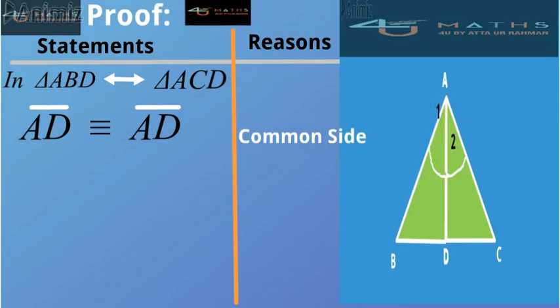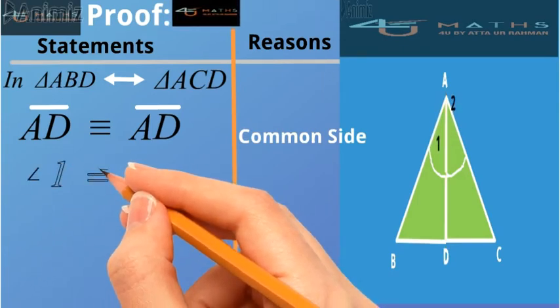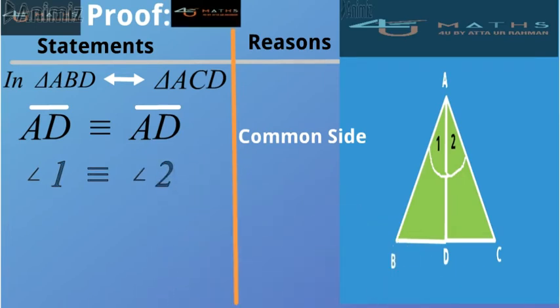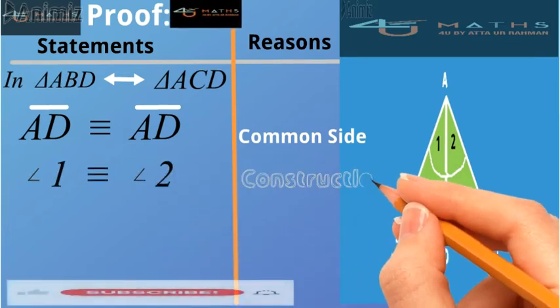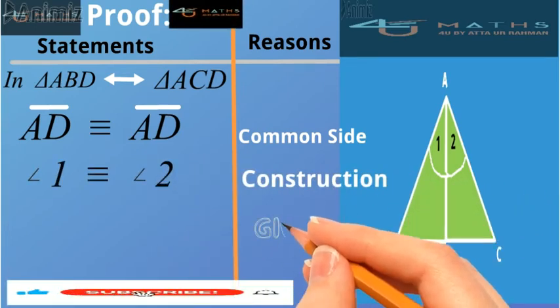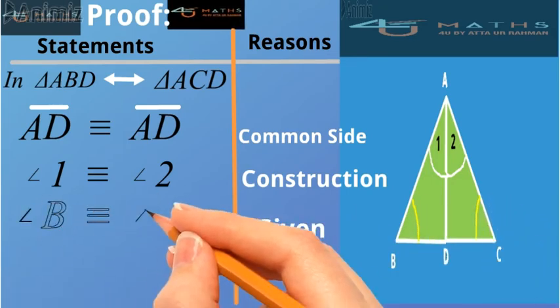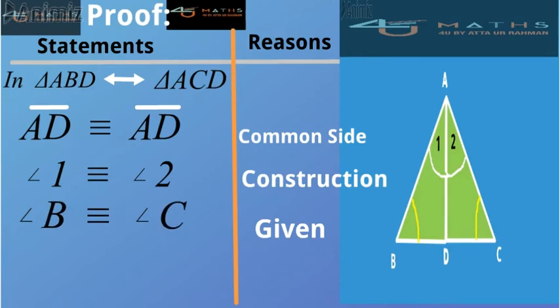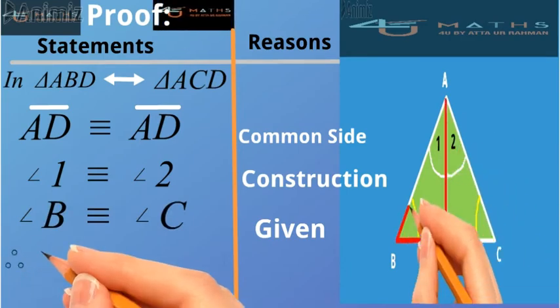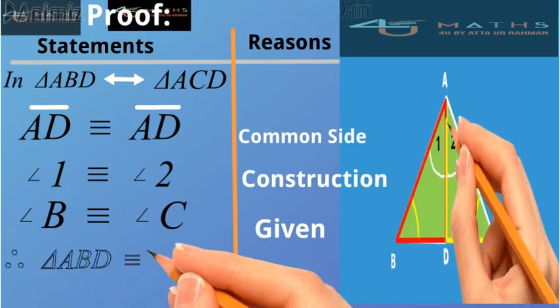Also, angle 1 is congruent to angle 2 because of construction. Also given that angle B is congruent to angle C. Hence we conclude that triangle ABD is congruent to triangle ACD.